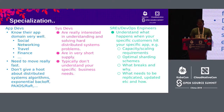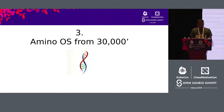I think it is very useful to understand these distinctions. SREs are good at running reliable systems. Application developers are good at their application domain. So what we think is that ultimately we need a distributed operating system — Amino OS.